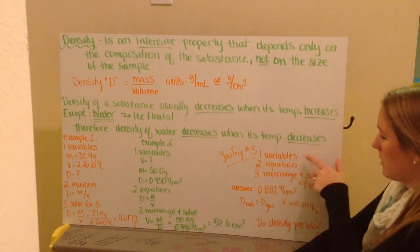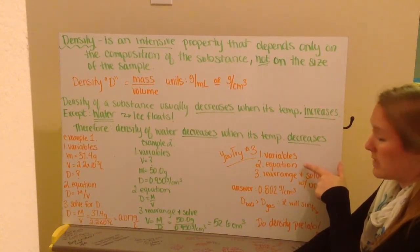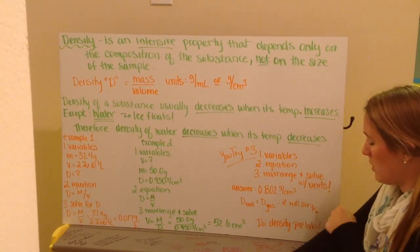So again, you want to write down your variables first. Write down the equation for density. Then rearrange. And once you've rearranged, solve and remember to give your units.